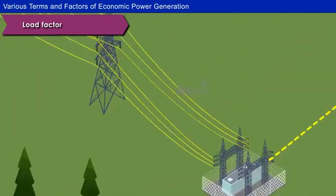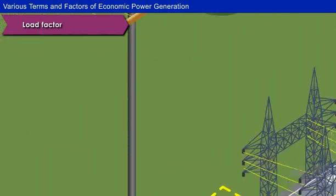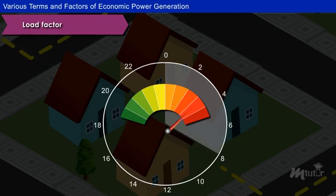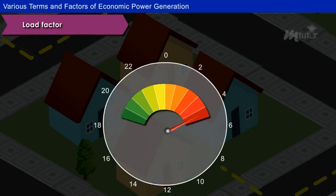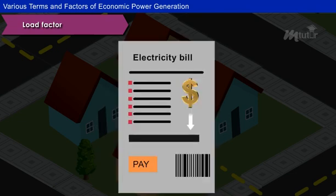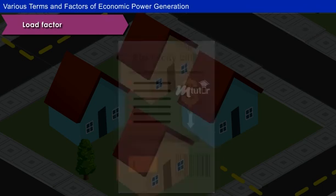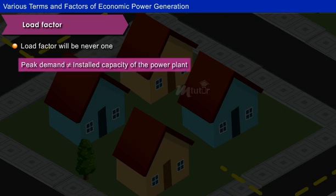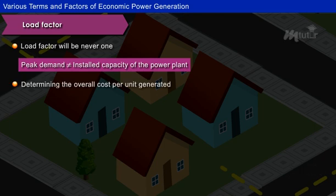Whenever a power plant is constructed, it is designed to serve the maximum demand of the consumers. If the consumers maintain the maximum demand throughout the day, then the fullest capability of the power plant will be utilized and it will reduce the cost of the electricity bill. But practically, this is not the case. The load factor will never be one, as the peak demand is not equal to the installed capacity of the power plant in the actual case. Thus, the load factor plays a key role in determining the overall cost per unit generated.